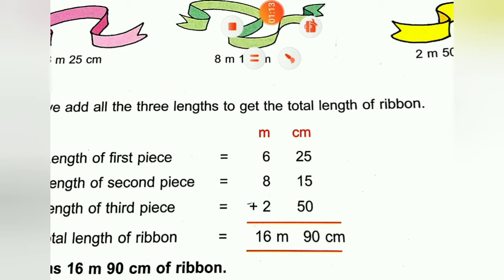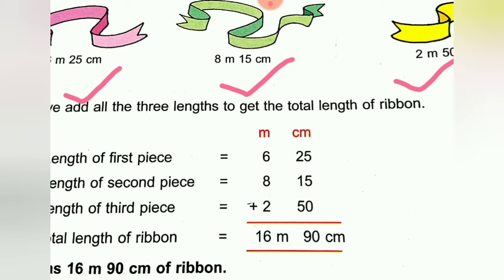As you can see here, the length of the first piece is six meter twenty-five centimeters, the second piece is eight meter fifteen centimeter, and the third one is two meter and fifty centimeter. We make a column of meters and a column of centimeters, arrange them accordingly, and then add just as you do simple addition.